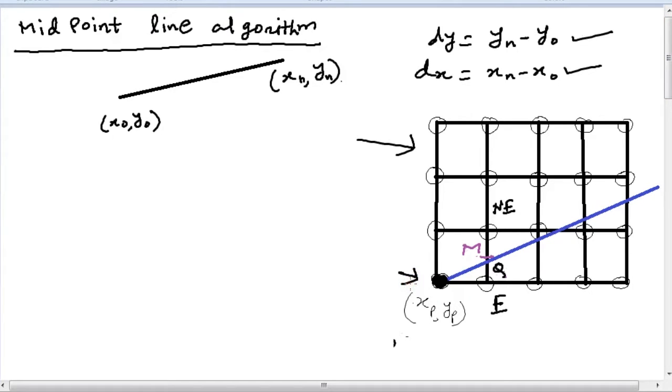So the midpoint between the next E and NE pixel is given by M, which we can write as xp plus 1, yp plus half, because it goes one pixel width to the right and goes half pixel width along y direction upwards.